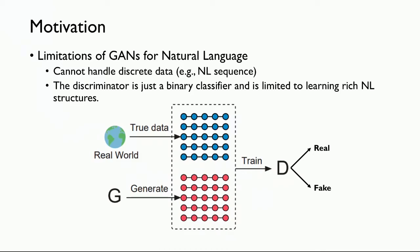We know that GANs achieved great success in computer vision, but they faced many challenges for natural language. The first limitation is they cannot smoothly handle discrete data. The second limitation is the discriminator is designed as a binary classifier and is limited in learning rich natural language structures.